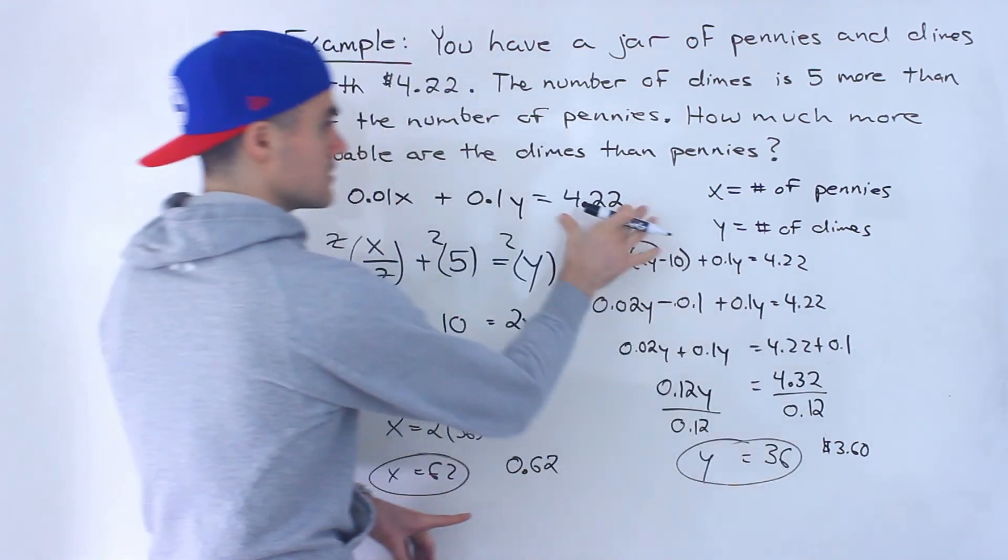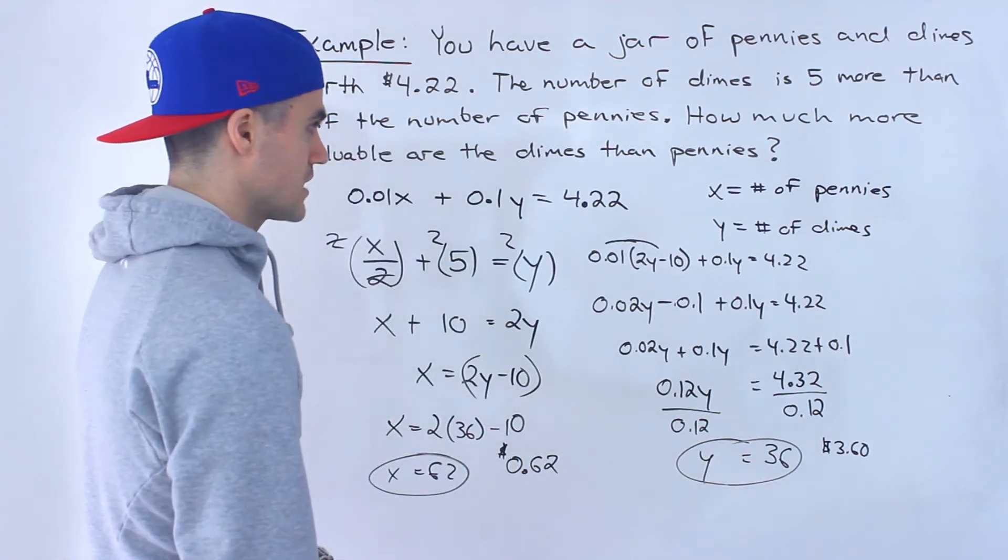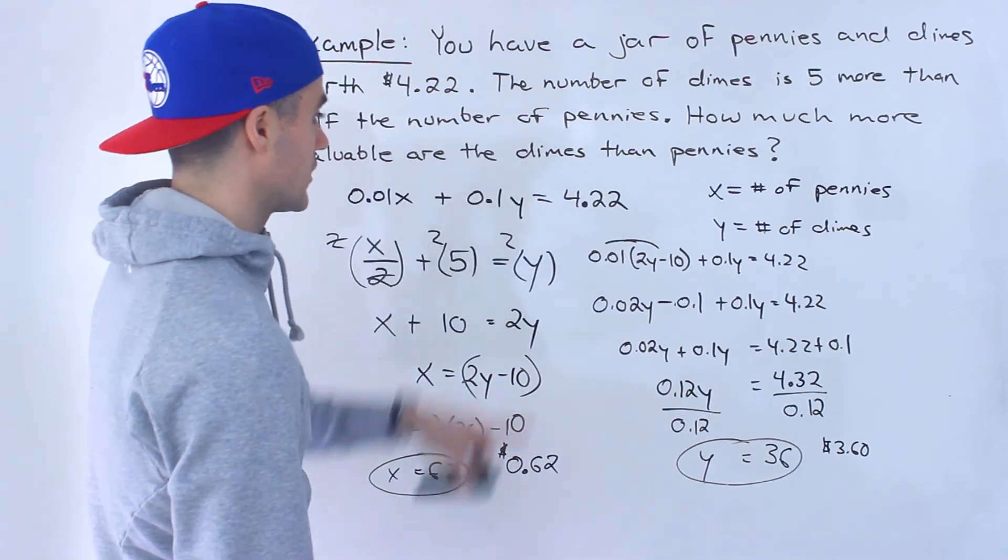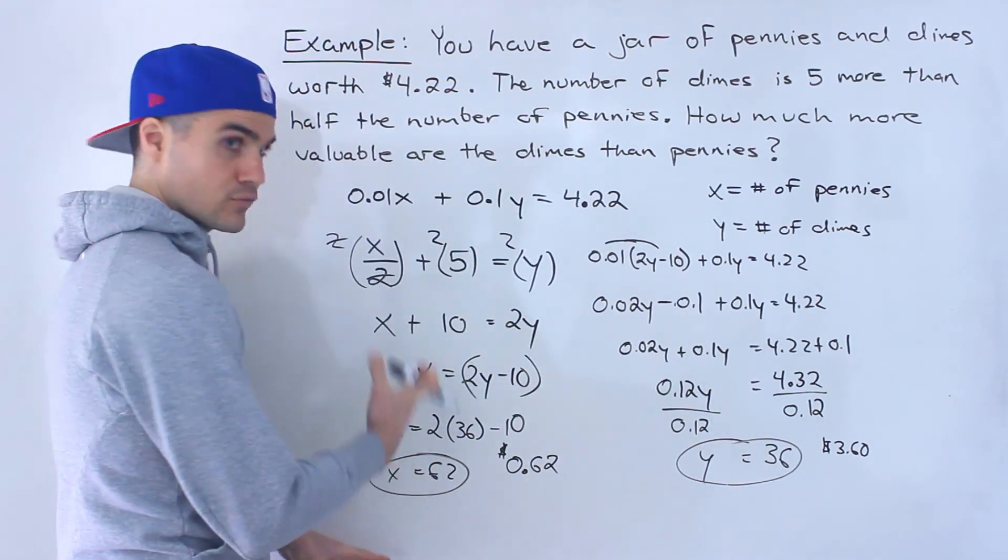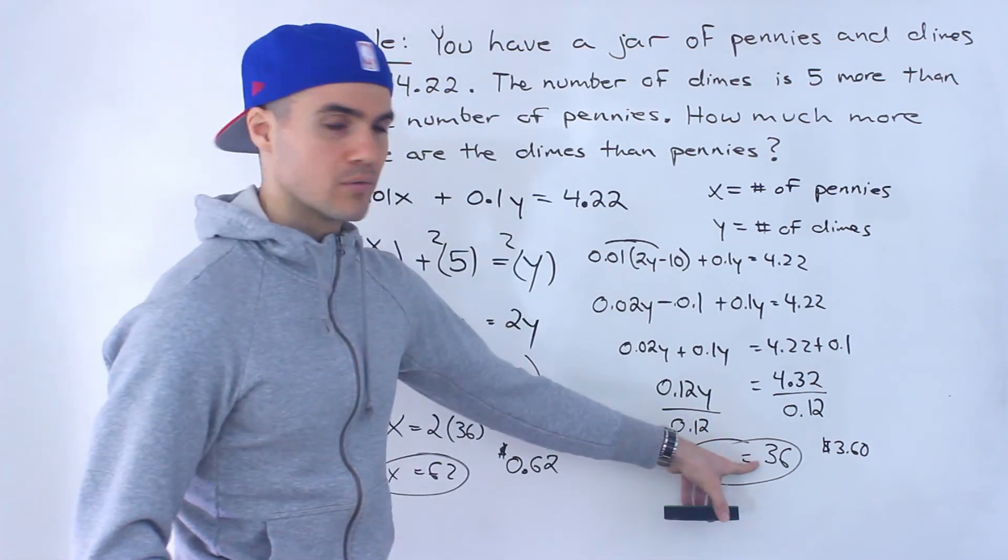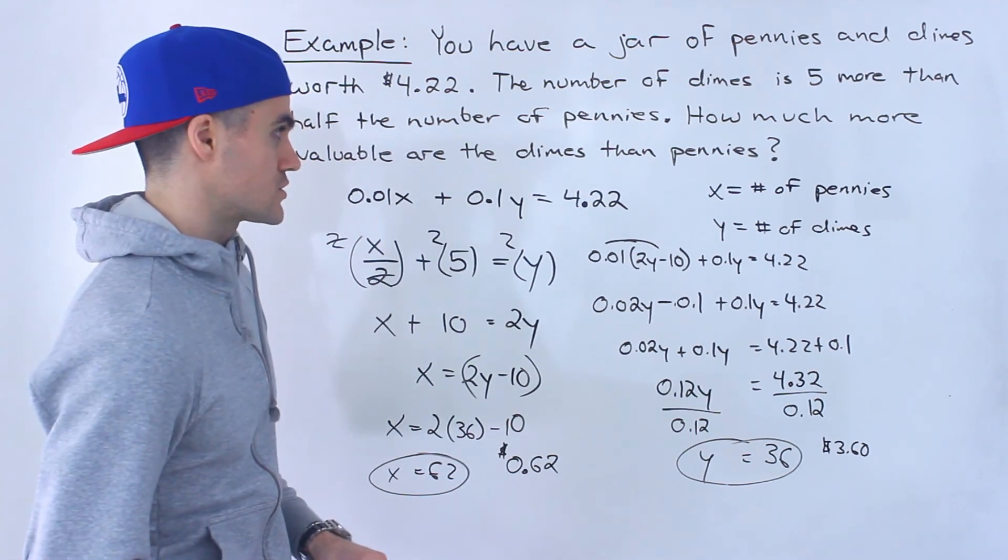And notice when we add these two, we're basically plugging it into this equation. When we add these two values, we end up getting four dollars and 22 cents. So it checks out there. And then notice the number of dimes is five more than half the number of pennies. The number of pennies is 62. If we divide that by two we get 31, and then add five we would get 36. So we could be pretty confident that these solutions are correct.